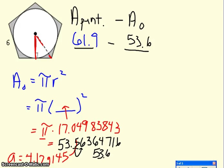Now the only thing left to do is to subtract. 61.9 minus 53.6 gives me 8.3 units squared. So the area of the shaded region was, I took the area of the pentagon, which we found in our last problem, subtracted the area of the circle, which I just found here, and I got 8.3 units squared.